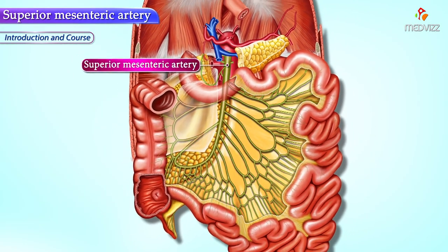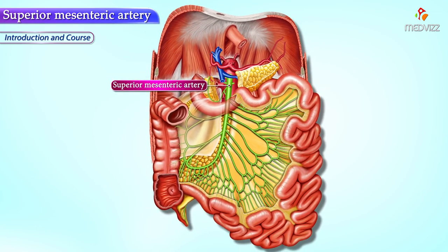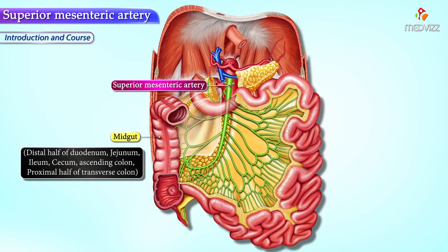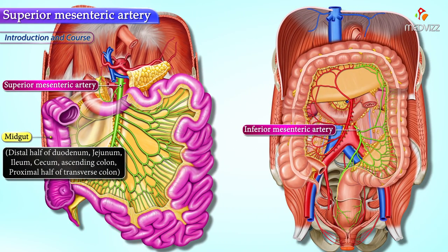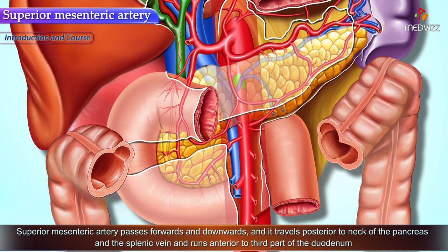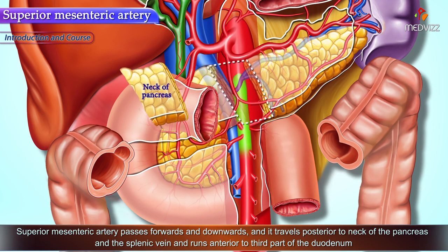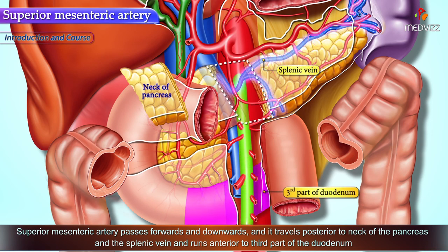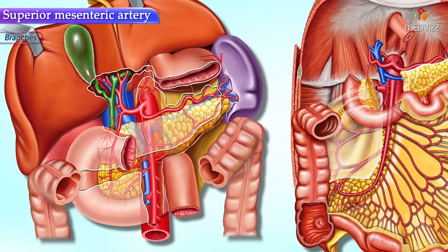The superior mesenteric artery supplies all the structures formed from the midgut, while the inferior mesenteric artery supplies the structures of the hindgut. The superior mesenteric artery passes forwards and downwards, traveling posterior to the neck of the pancreas and the splenic vein, and runs anterior to the third part of the duodenum.